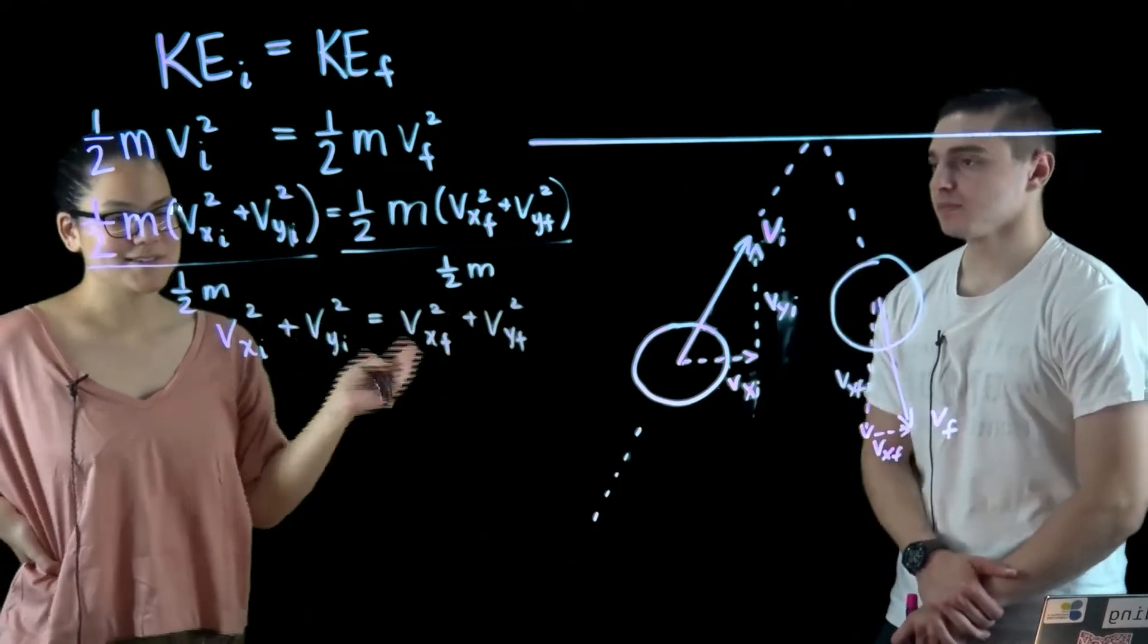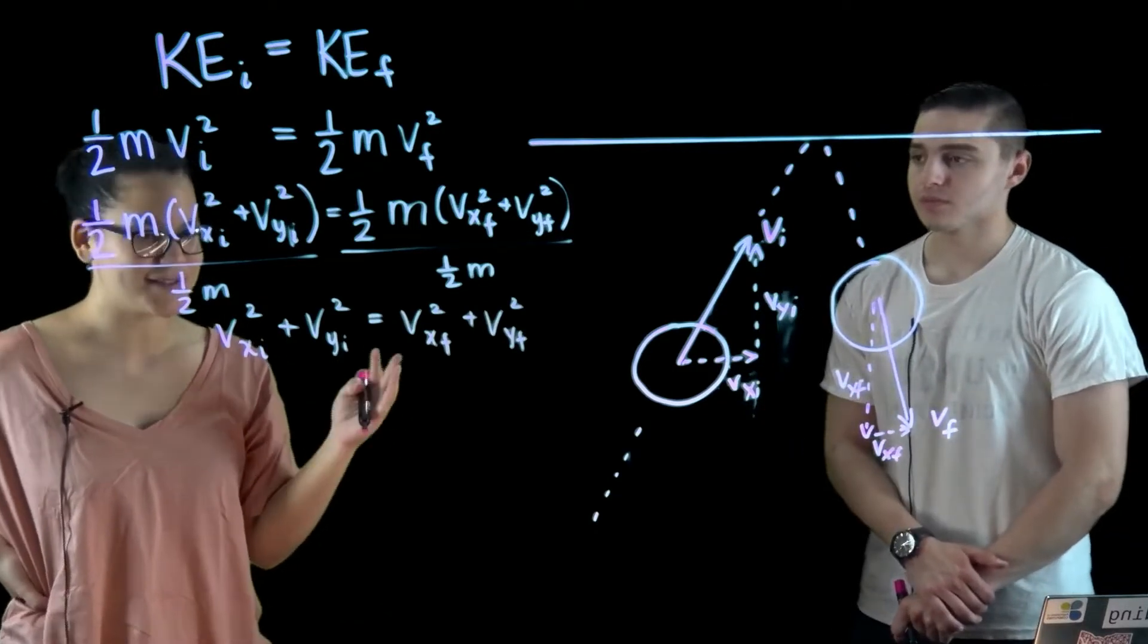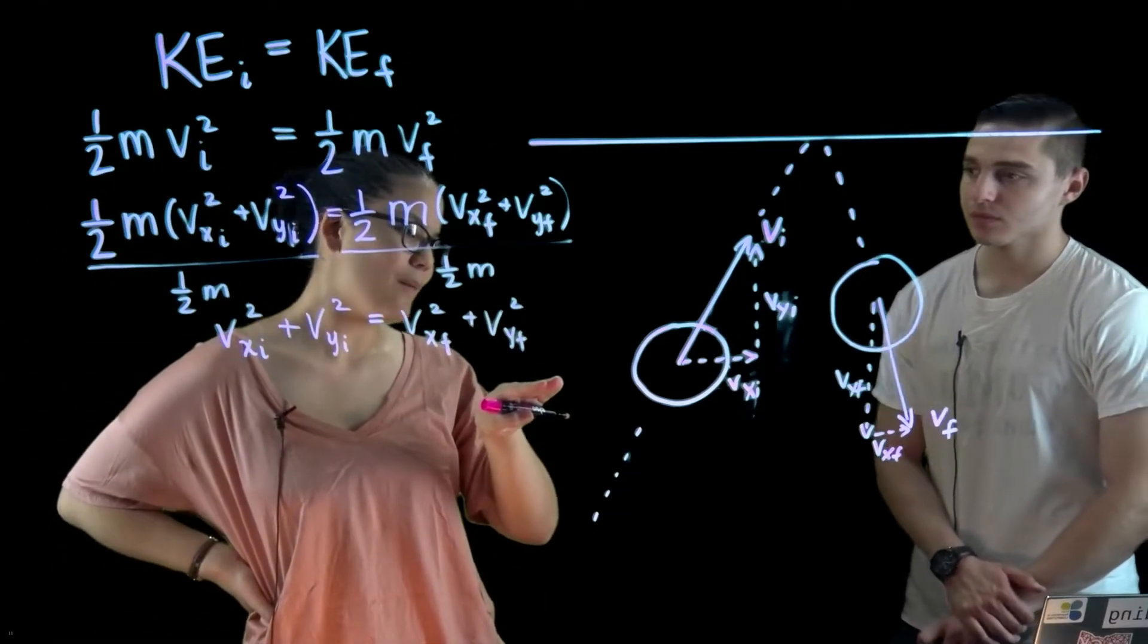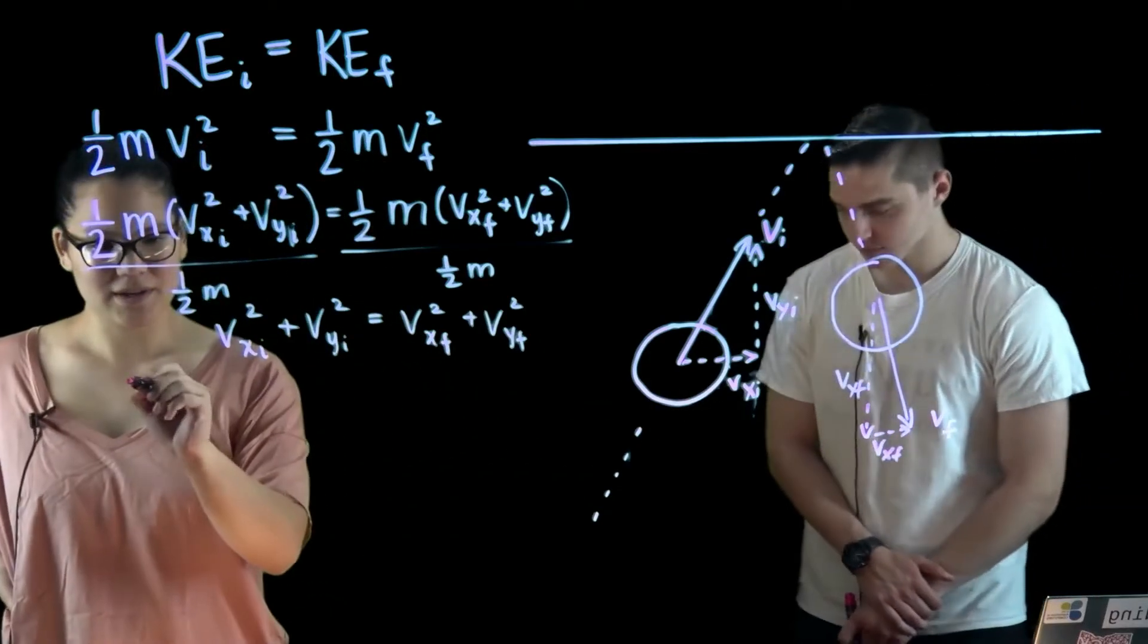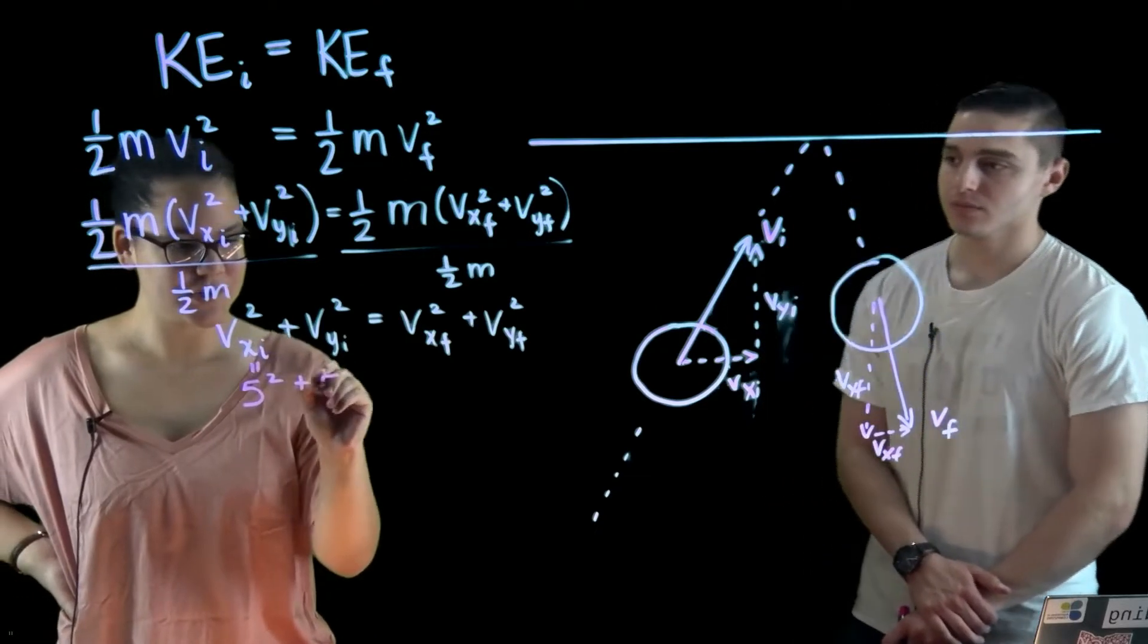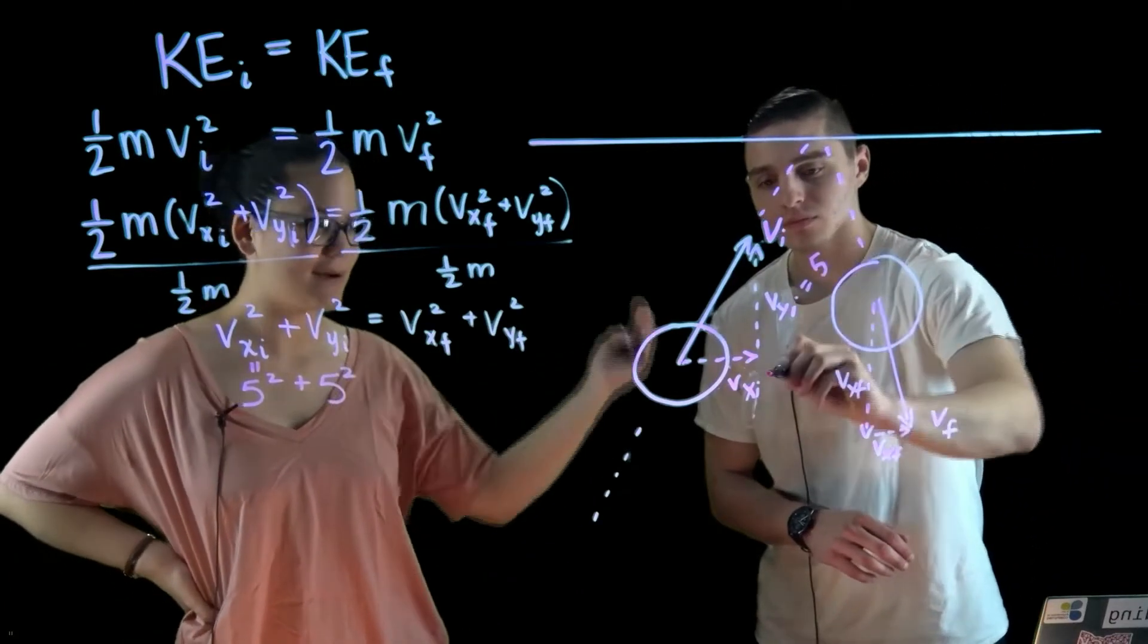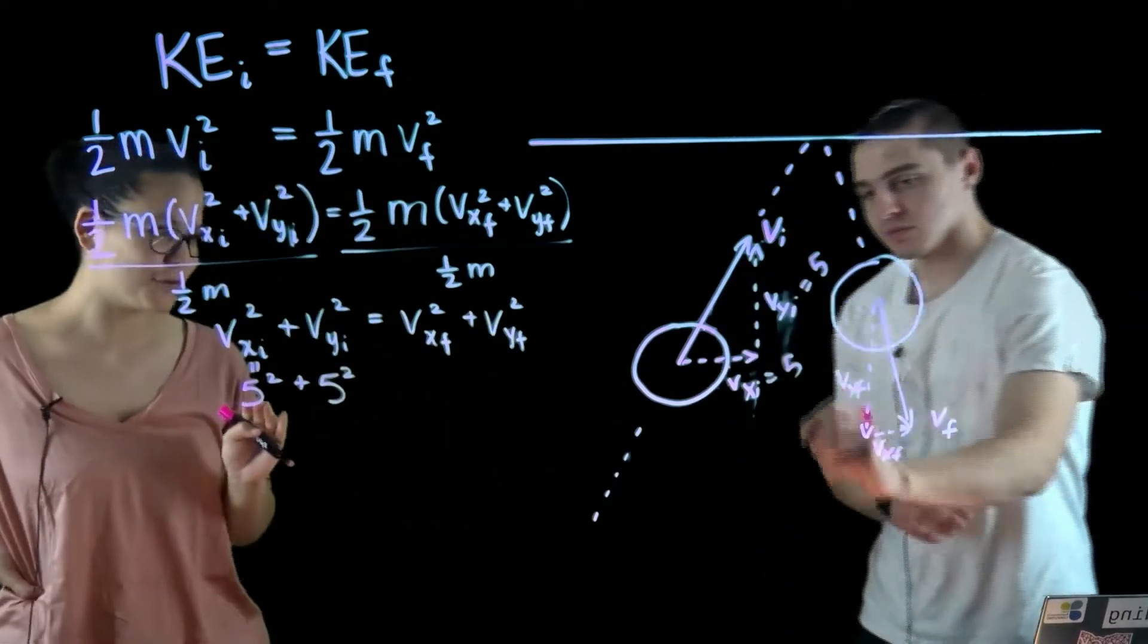Okay, so let's consider some example values for this velocity vector. Let's consider the blob coming in with component 5 in the x direction and 5 in the y direction. So that means it's going in each time step as far over as it is going up, and it's coming in towards the ceiling at a 45 degree angle.